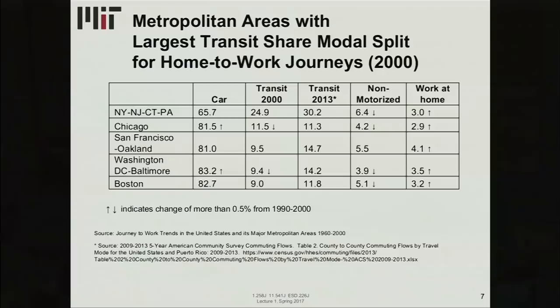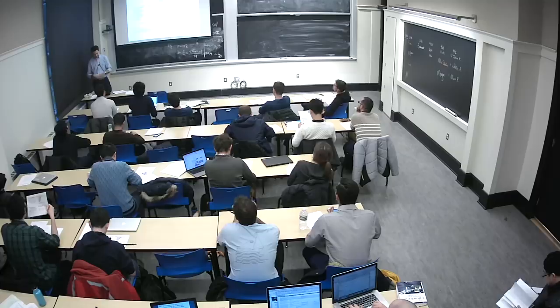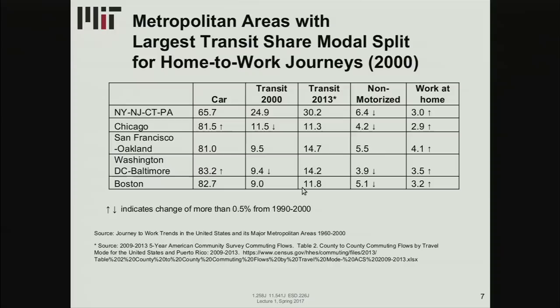If we look at transit share modal split for home to work journeys, this is a little older. This is a study that was completed with data from 2000, from year 2000. And we have different numbers here, but I just want to focus on these five biggest public transportation systems or big cities. And we see the mode share in each of them for car and for transit in 2000 and transit in 2013. So we can see that although in Chicago it mostly has stayed around the same, in New York and San Francisco and Washington and Boston it has increased. So there's been an increase in the transit mode share. Population has increased in these cities and so has the public transportation mode share.